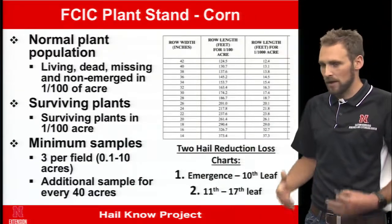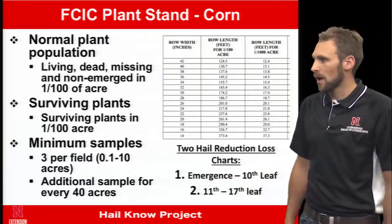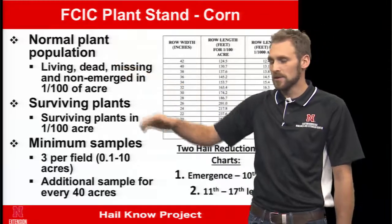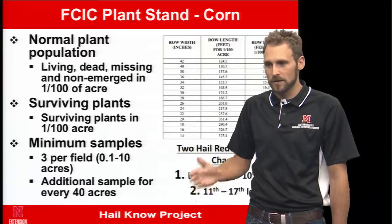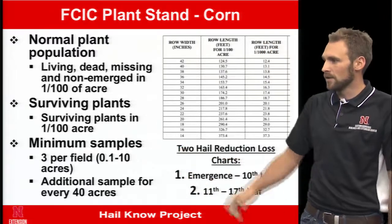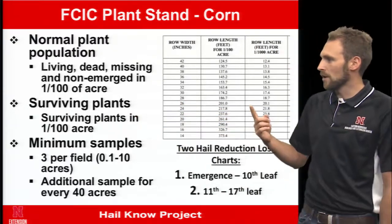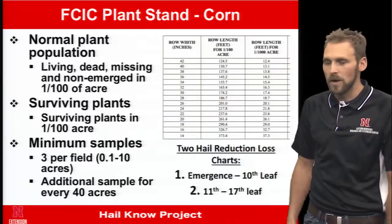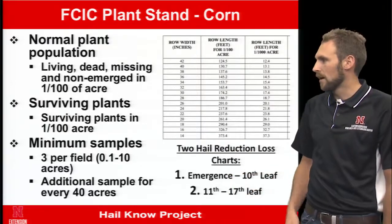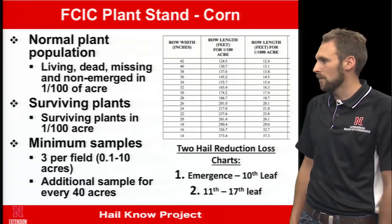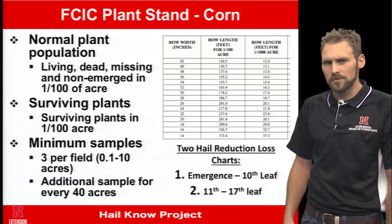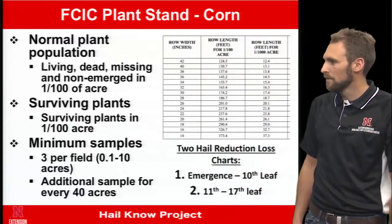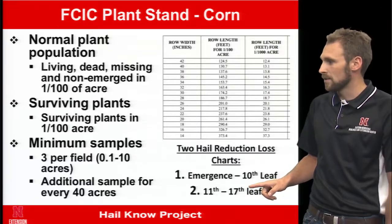Let's get into evaluations, starting from emergence. First, you want to know the normal population in the field — including everything: living, dead, and even missing plants. Dig up empty spaces to determine if a plant is there. Do this on one one-hundredths of an acre and count surviving plants. This chart shows row width in inches — in 30-inch rows, for one one-thousandths of an acre you need 17.4 feet. Take a minimum of three samples, with one additional sample for every 40 acres in the field.